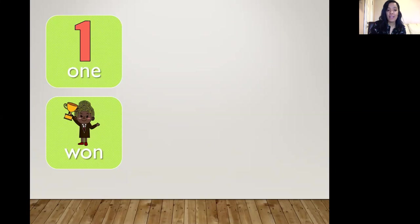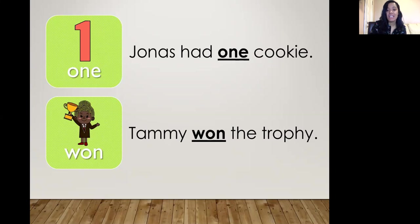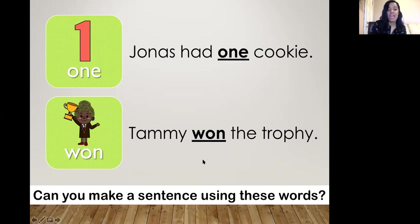One and won. The number one and I won, the past tense of the word win. Jonas had one cookie. Tammy won the trophy. So again, we're talking about the number and then we're talking about an action. Can you make a sentence using these words?